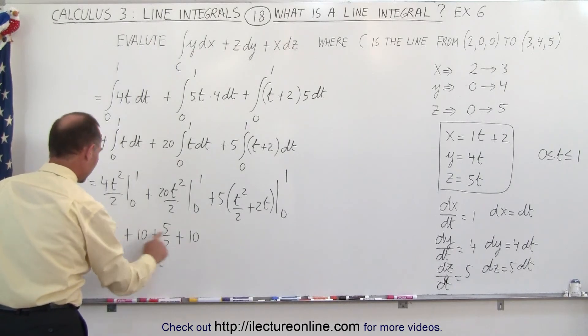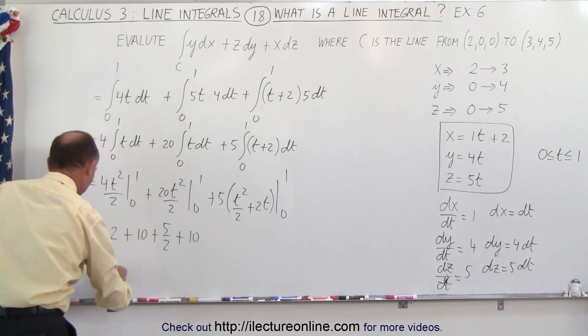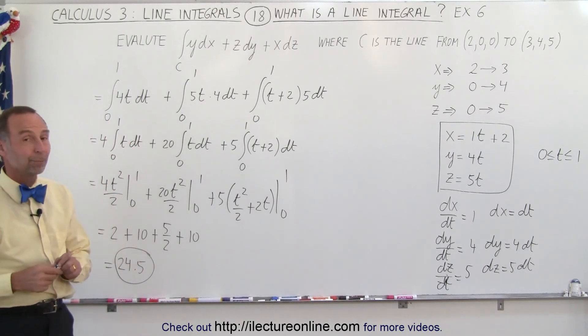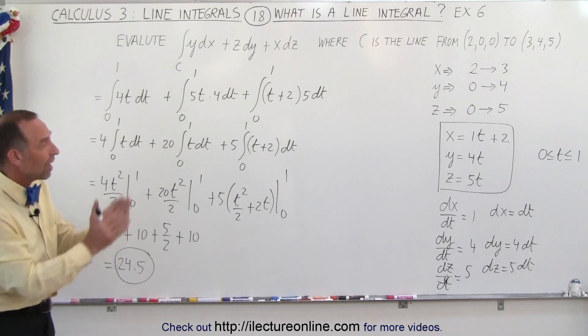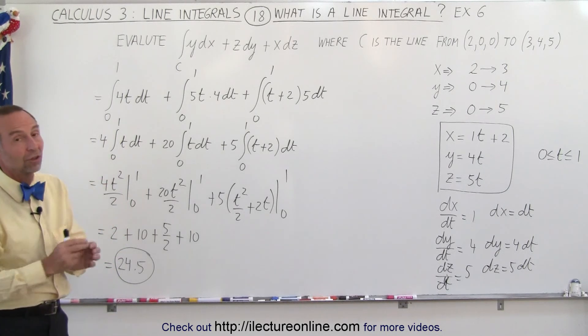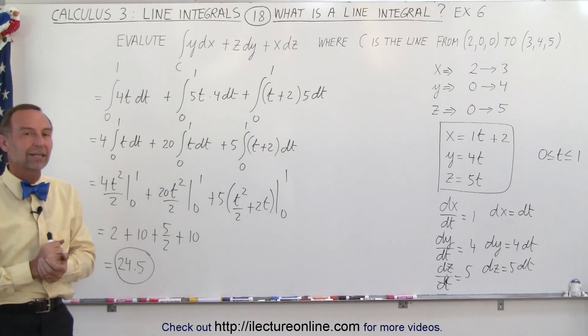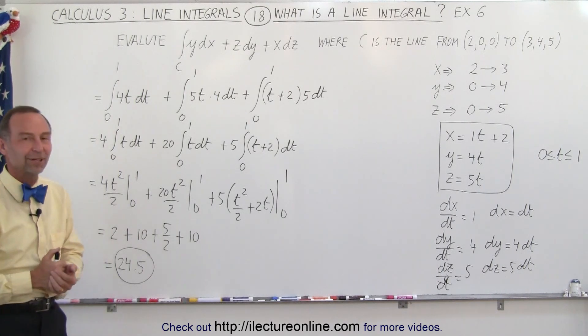You can see that's 10, 20, 22, 24 and a half. This is equal to 24.5, and that would be the result of that particular integral. But again, a very good example of how to find the parametric equations, especially when the curve is a straight line, and especially when we have all three variables in the integral. And that's how it's done.